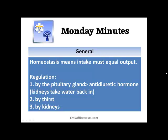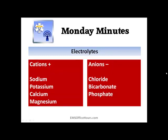Now, electrolytes — just real quick. Your cations, which are positively charged, include sodium, potassium, calcium, and magnesium. Your anions, which are the negative electrolytes, are chloride, bicarbonate, and phosphate. We can go much deeper into cations and anions and how they relate to each other in future episodes, but for right now I'm just listing them. When you see a question asking what are the cations, you'll see sodium, potassium, calcium, magnesium.